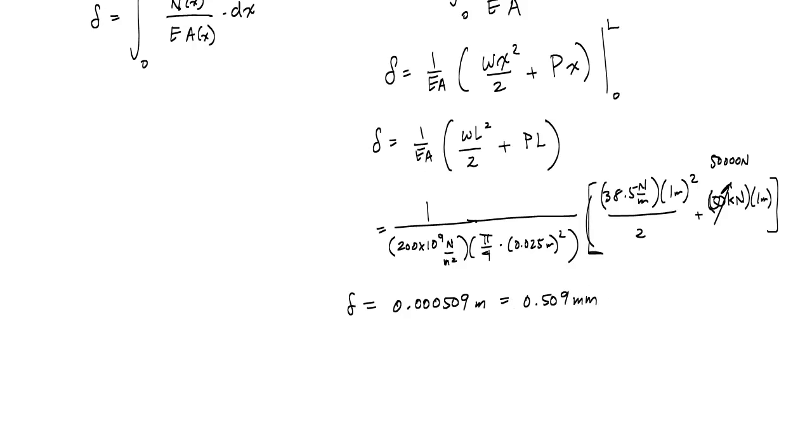And this axial deformation is going to be equal to 0.000509 meters, which is the same as 0.509 millimeters. And if anything, this problem tells us it takes a lot of force to deform steel in the axial direction. But here it is. And hopefully, that was useful for you. And let me know if you have any questions. See ya.